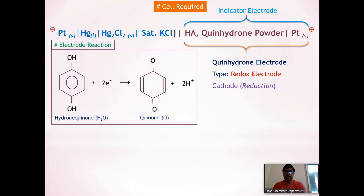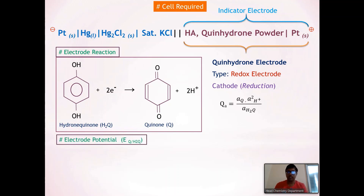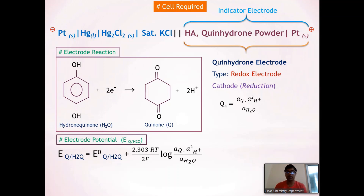Let's see the electrode reaction. The quinhydrone electrode contains hydroquinone and quinone. Hydroquinone accepts two electrons to form quinone and two H⁺ ions. For this reaction, the reaction quotient is: activity of Q × (activity of H⁺)² divided by activity of H₂Q. Using the Nernst equation: E(Q/H₂Q) = E⁰(Q/H₂Q) + (2.303RT / 2F) × log[(activity of Q × (activity of H⁺)²) / activity of H₂Q].